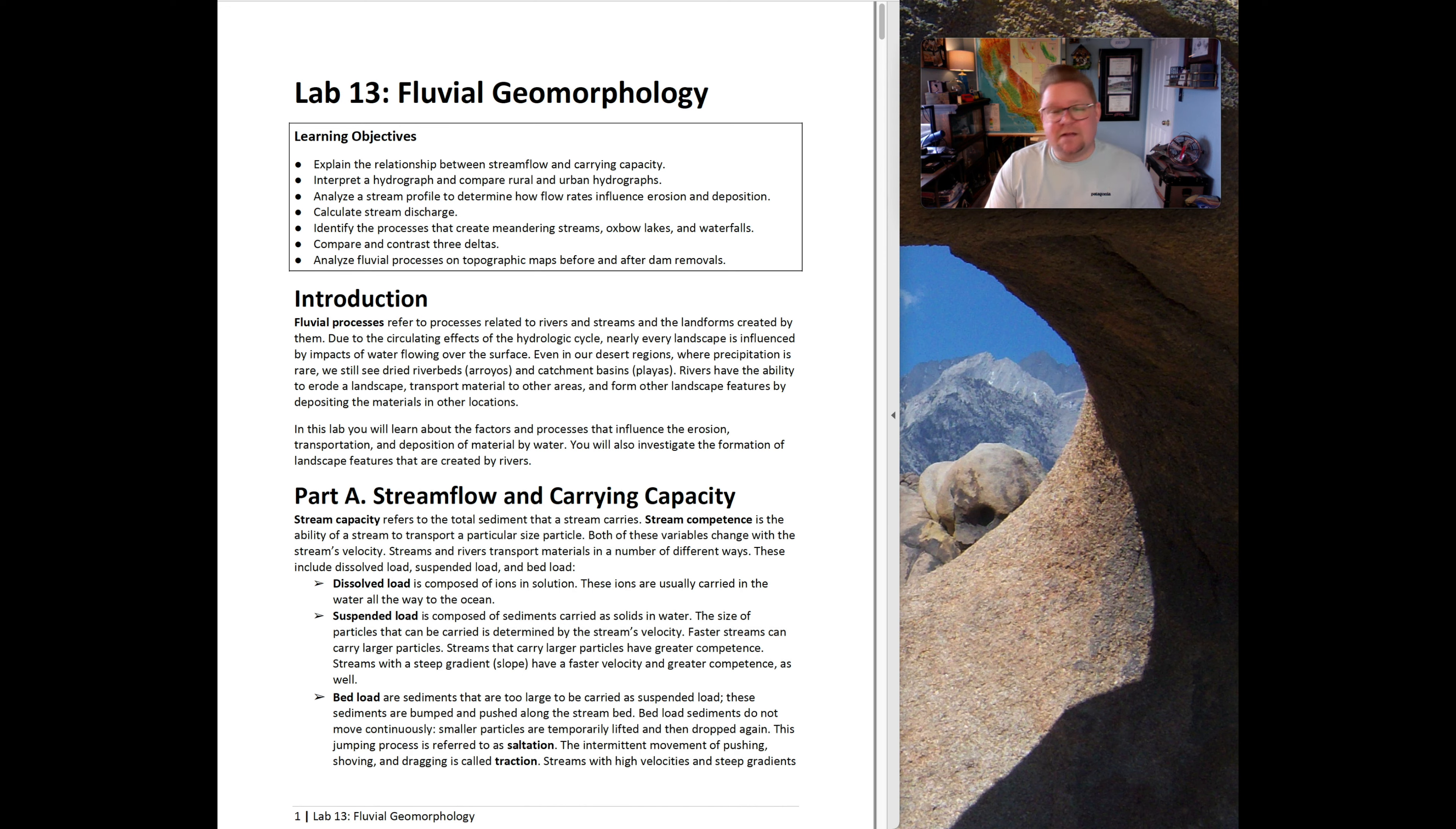The learning objectives of this lab are to explain the relationship between stream flow and carrying capacity, interpret a hydrograph and compare rural and urban hydrographs, analyze a stream profile to determine how flow rates influence erosion and deposition, calculate stream discharge, identify the processes that create meandering streams, oxbow lakes, and waterfalls, compare and contrast three different deltas, and analyze fluvial processes on topographic maps before and after dam removals. That being said, let's start Lab 13.